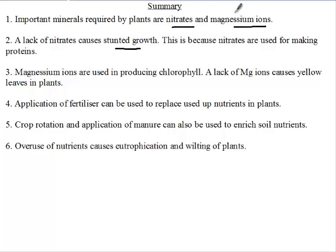Magnesium ions are used in the production of chlorophyll, so a lack of magnesium ions will cause yellowing of leaves, and therefore there will be no photosynthesis and the plants will die off.